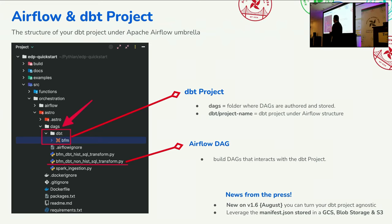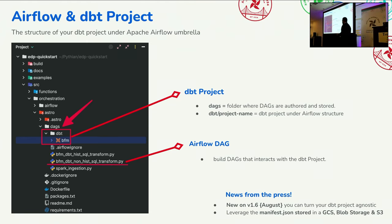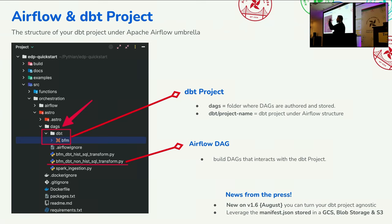We used to have only this configuration available until version 1.6. Now, based on the latest news, what you can do is make it more agnostic. A lot of customers asked: 'I don't want to push all my project inside the DAGs folder, I'd like to leave it outside.' Now you can. You can push your dbt project to a manifest, store it on GCS, Blob Storage, or S3, and invoke from there. That's a super cool thing.